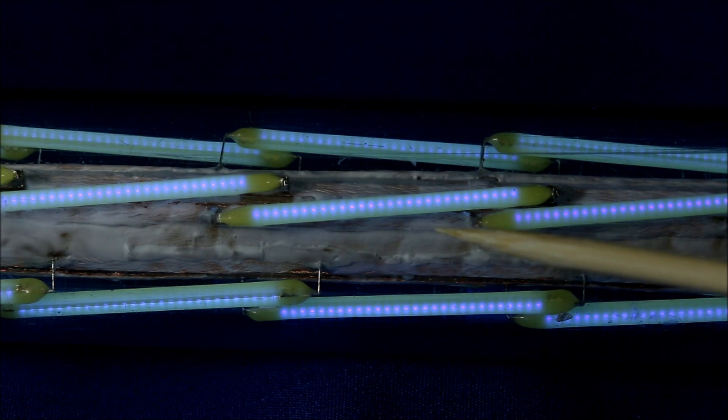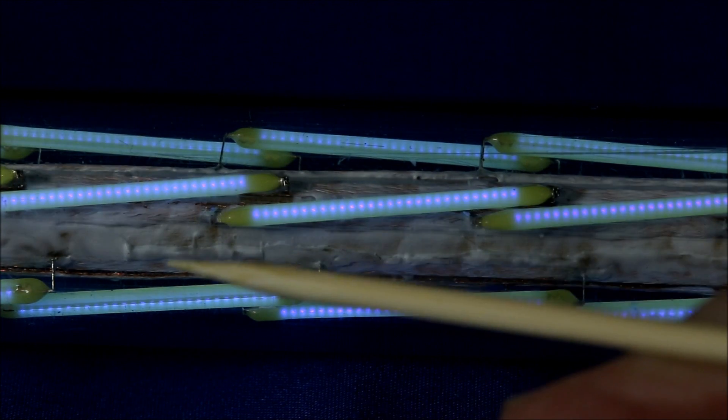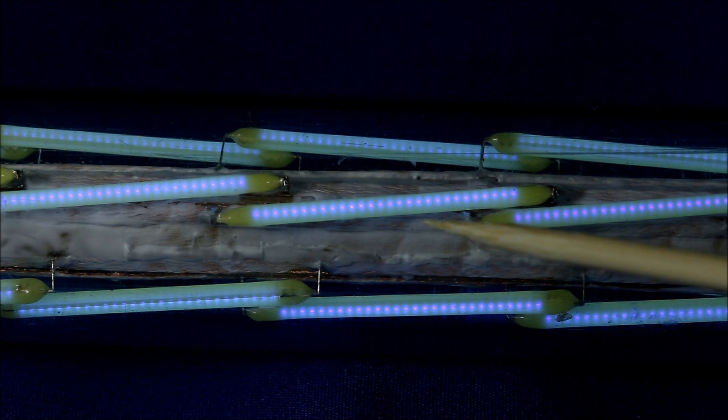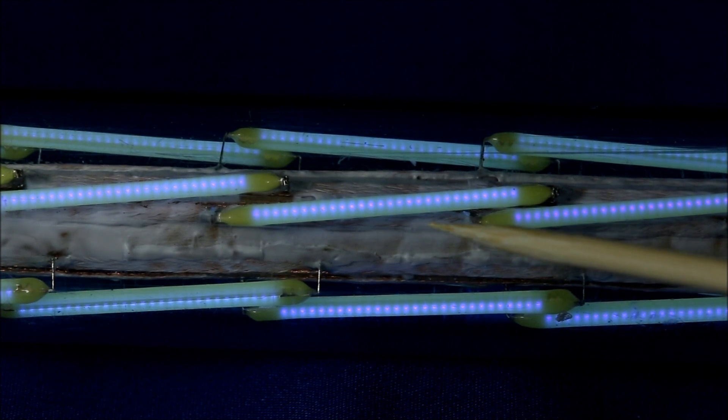Filament LEDs radiate their light radially straight outward, so that the neighboring LEDs can't intercept any of the light. This makes them much more efficient than a regular string blade construction.